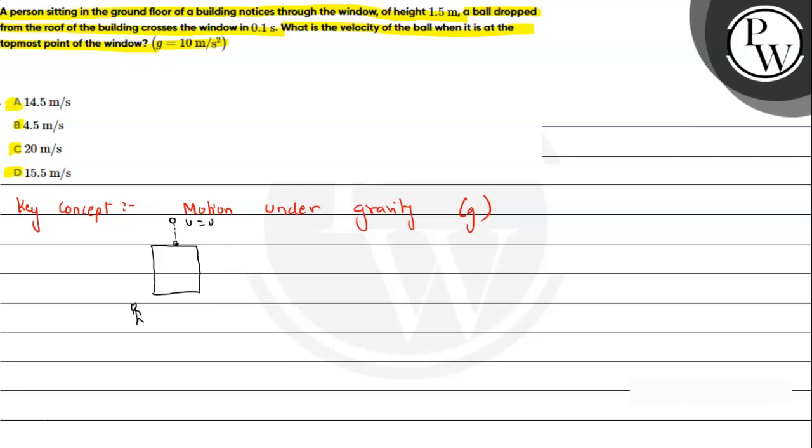When it reaches the window at the topmost point, it reaches velocity v. The window height is 1.5 meter and it covers this in 0.1 second. We are asked to find v, the velocity at the topmost point of the window.